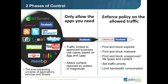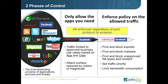Understanding that even in those applications that we need, there may be threats we need to look for — such as exploits or malware — and we can clean those out. We can also block certain types of content, prioritize traffic, and limit bandwidth. This two-phase approach lets us set what we need and then enforce policy on that allowed traffic, regardless of port and protocol.